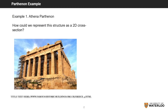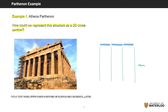The first example we will look at is the Athena Parthenon. Pause the video here and see if you can determine how to represent this structure as a 2D cross-section. First, we will draw the columns and beams using lines.